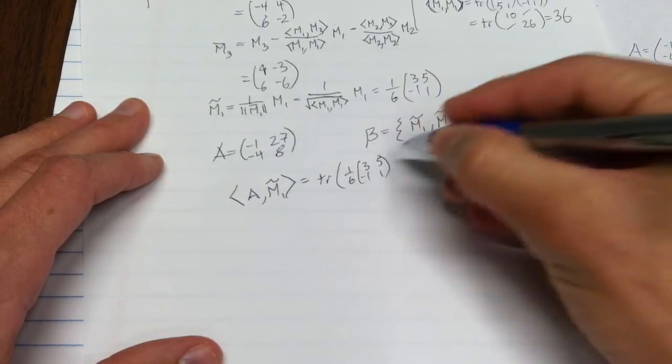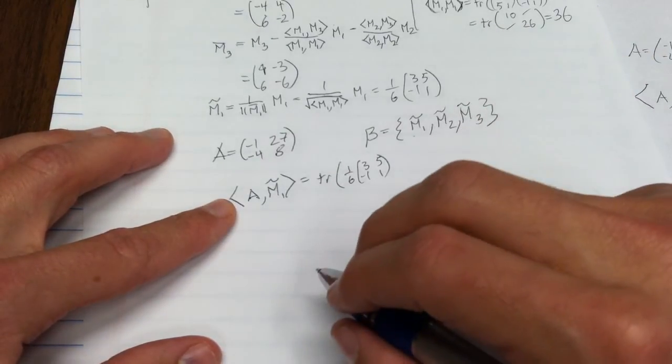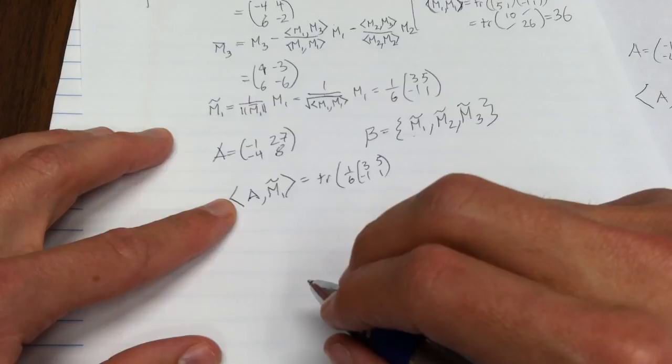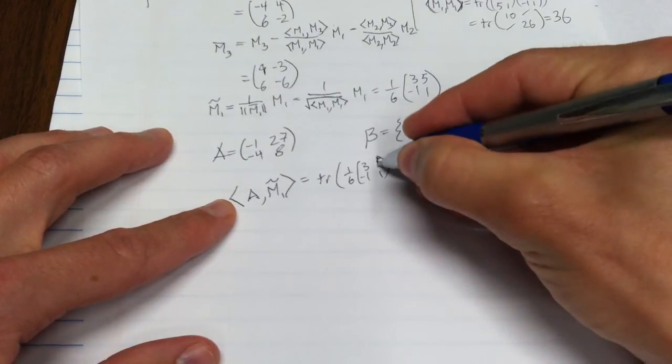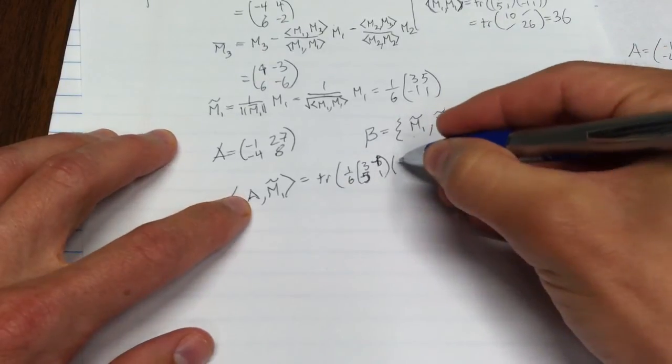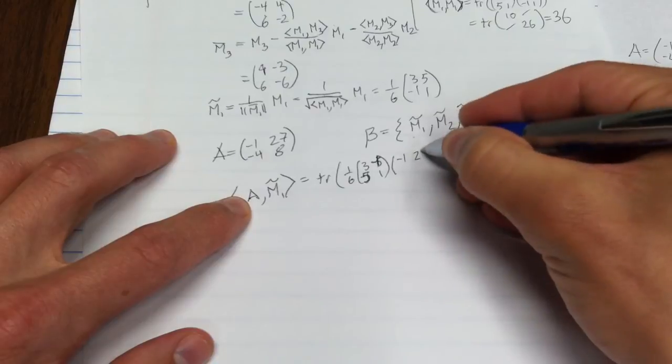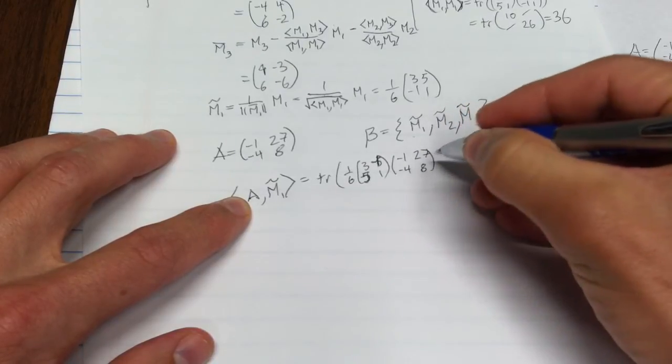Well, it turns out you can just take this inner product. How do you do that? You take the trace of m1, that's 1/6, (3, 5, -1, 1), times, let's see, I didn't transpose that, (3, -1, 5, 1). Then I need to put in A, (-1, 27, -4, 8).